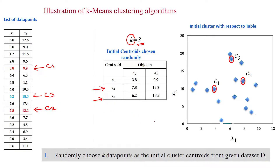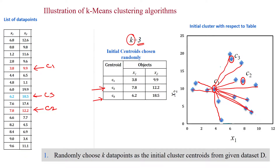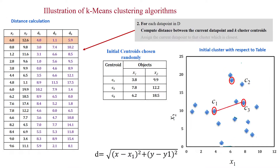This is the first step. Then we have to calculate the distance between all the data points and these cluster centers. Whichever cluster center is nearest to a data point, we will assign that data point to that corresponding cluster center. We will use the Euclidean distance metric for this. Based on that, I am calculating the distance for each and every cluster centroid.